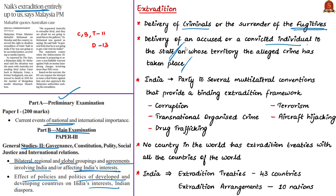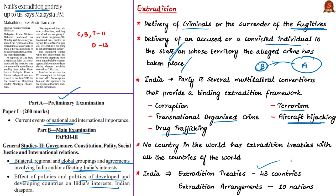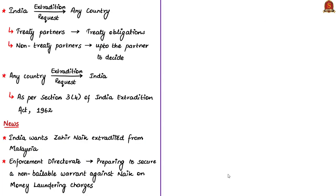For example, if a citizen of country B commits a crime in country A, then country A will request surrender of the person from country B — this process is called extradition. India is party to many multilateral conventions that provide binding extradition frameworks to prevent transnational crimes such as corruption, organized crime, drug trafficking, terrorism and aircraft hijacking. India has extradition treaties with around 43 countries and extradition arrangements with 10 nations. Extradition arrangements are non-binding and do not impose legal obligations at the international level, whereas a treaty is binding with specific legal obligations.